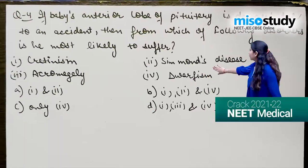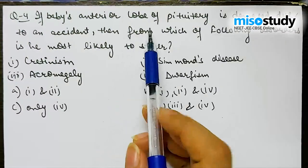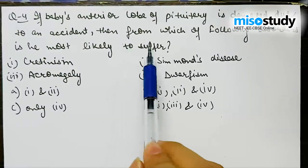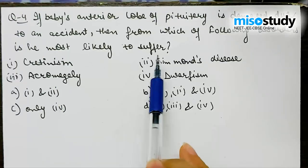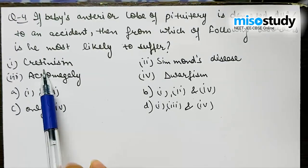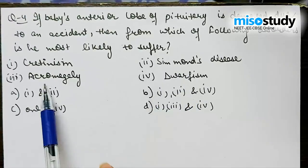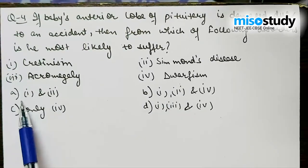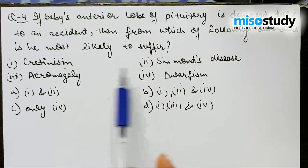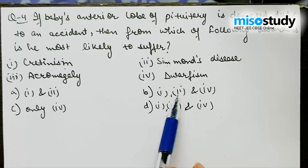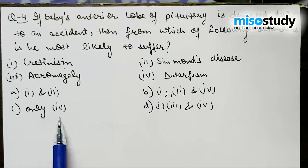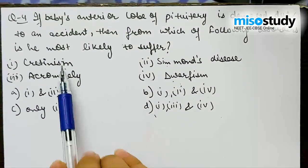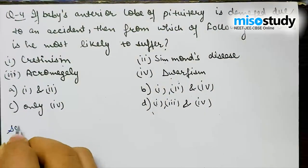If a baby's anterior lobe of the pituitary is damaged due to an accident, which of the following disorders is the baby most likely to suffer? 1: Cretinism, 2: Simmond's disease, 3: Acromegaly, 4: Dwarfism. Options are: A — 1 and 2; B — 1, 2 and 4; C — 1, 3 and 4; D — 1, 3 and 4 (cretinism, acromegaly and dwarfism).